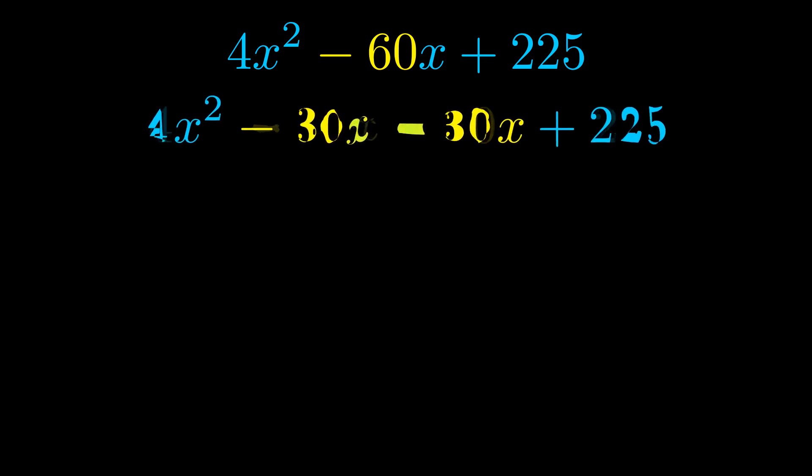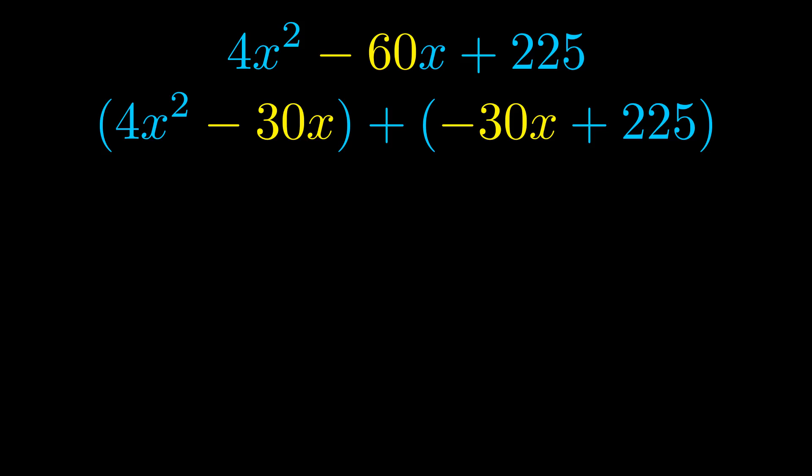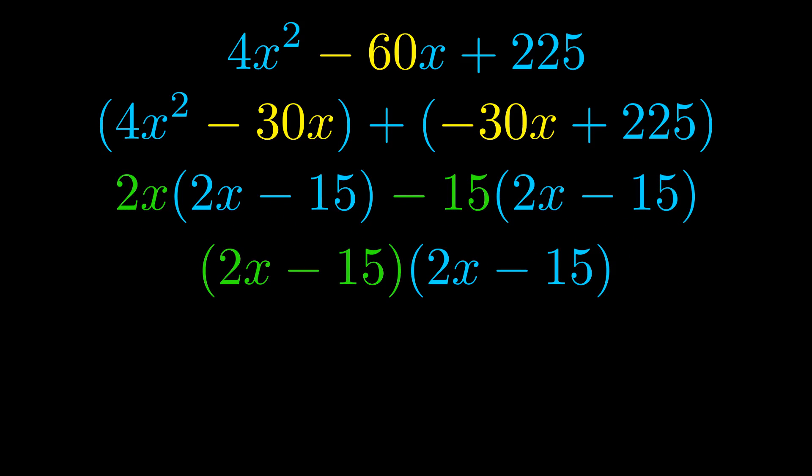Once we've done this, we go ahead and we put parentheses around the first term and the last term, and we do that so that we can take the greatest common factor out of both terms. We can see the greatest common factor is now outside in green. Notice also how what remains inside of the parentheses is the same in both cases. The blue values are the same.